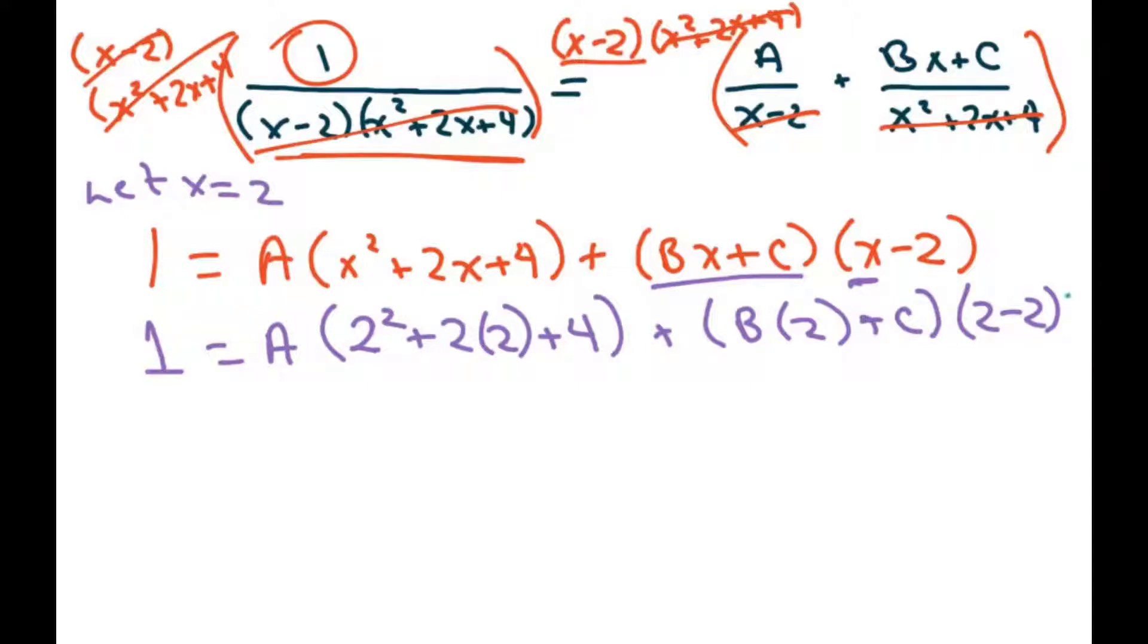Well, 2 minus 2 is just 0, so that knocks this whole thing out, so we merely have 1 equals A times 12, and I'll go ahead and put the 12 in front of the A. So we got our A, our A equals 1 over 12.